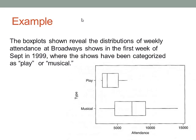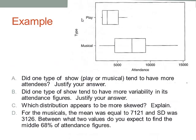Here's another example. The box plots shown reveal the distributions of weekly attendance at Broadway shows in the first week of September 1999, where the shows have been categorized as play or musical. Look at these box plots to answer the following questions. Did one type of show, play or musical, tend to have more attendees and justify your answers? Pause the video here and see if you can at least mentally go through A through D.